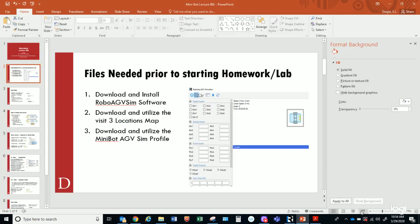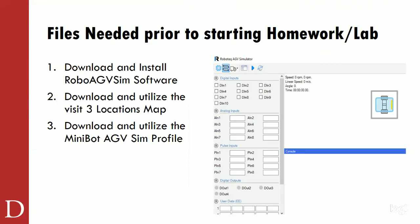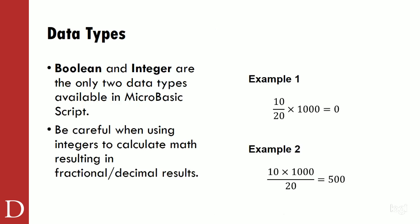So that's the first and foremost thing — number one, download and install. If you watch the video, it'll go through that pretty well. The intro video for the week will cover that. Download and utilize the Visit Three Locations map, and then download and utilize the Minibot AGV profile. Those are all pretty easy to use.